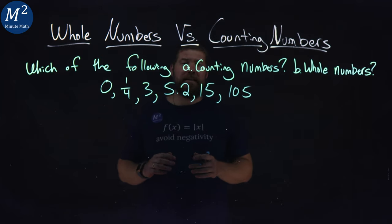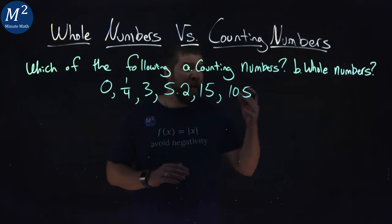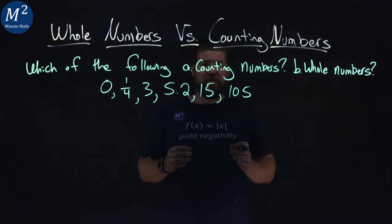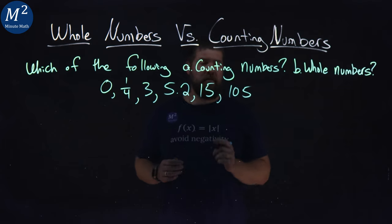Whole numbers are different. You start at 0 and then have all the counting numbers. It's just slightly different. Basically, whole numbers are counting numbers with 0 added.